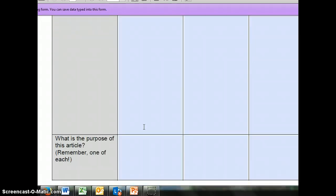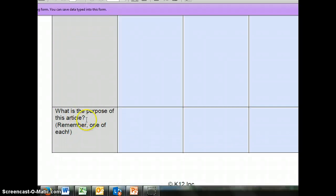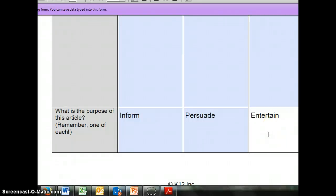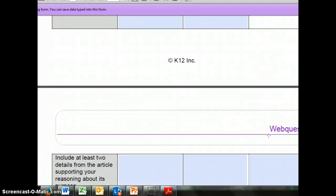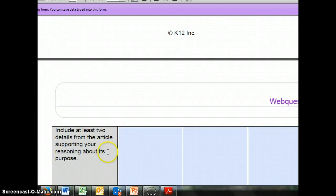Now here's where this assignment started to get a little tricky. So I'm going to scroll down to this last box. It says what is the purpose of this article, remember one of each. So here's where it's talking about writing to inform, maybe I'm going to do persuade over here and I'm going to do entertain here. So that's all you need to put in there. You don't have to talk about the purpose or the meaning or the tone or anything else. I want one article on inform, one article on persuade, one article on entertain.